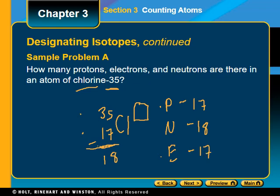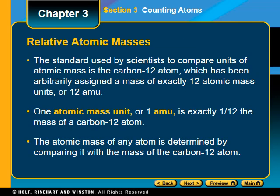Now let's talk about atomic mass. Scientists compare atomic masses using the carbon-12 atom, which has been arbitrarily assigned a mass of exactly 12 atomic mass units. They took carbon's mass, divided by 12, and each unit is exactly one atomic mass unit, abbreviated AMU — it's 1/12 the mass of carbon-12. The atomic mass of any other atom is determined by comparing it with the mass of carbon-12.